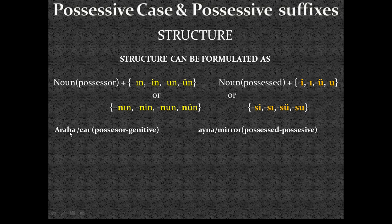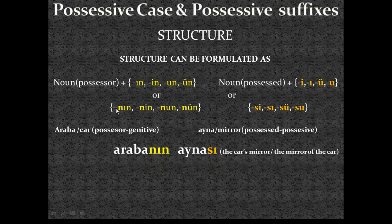For example: 'araba' as possessor — the last vowel is also the ending letter, so the possessor is ending with vowel. I need buffer 'n' letter. And the possessed noun 'ayna' (mirror) — 'a' is also the ending letter, so the possessed noun is also ending with vowel — I need possessive buffer 'S' letter. So: 'arabanın aynası' — 'a' and 'ı' requires 'ın', with buffer 'n' giving 'nın': 'arabanın'. And 'ayna' requires 'ı', with possessive 'S' giving 'sı': 'aynası'. 'Arabanın aynası' — the car's mirror or the mirror of the car.